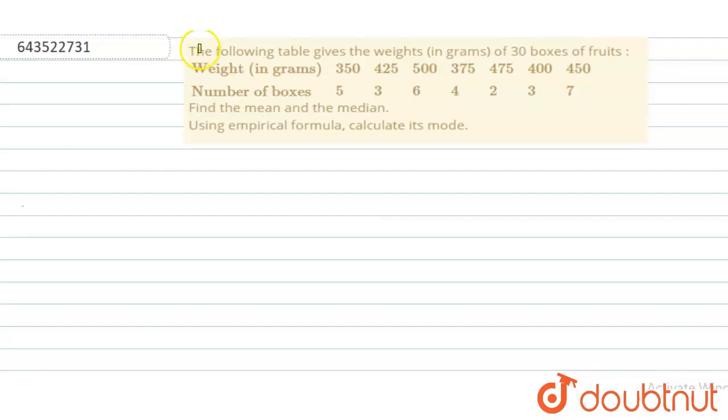The question says the following table gives the weight in grams of 30 boxes of fruits. We have to find mean, median, and mode.